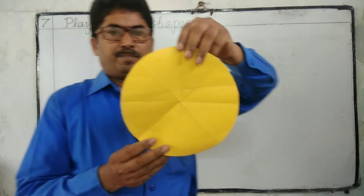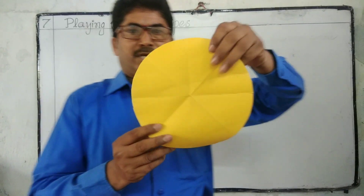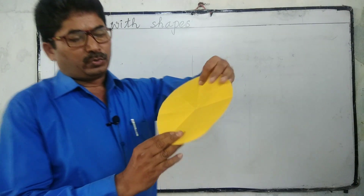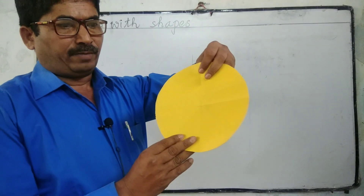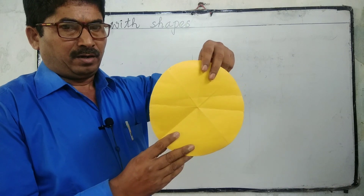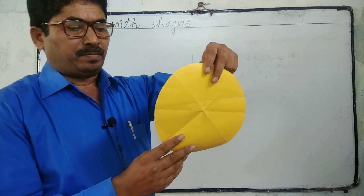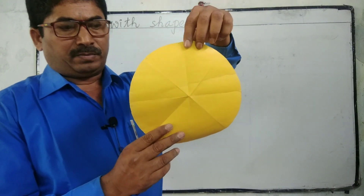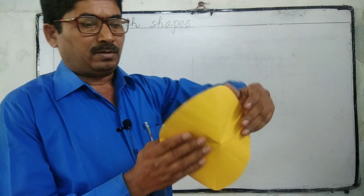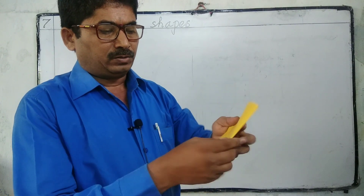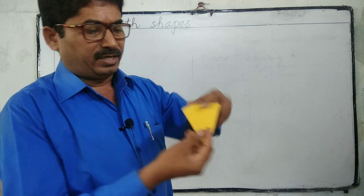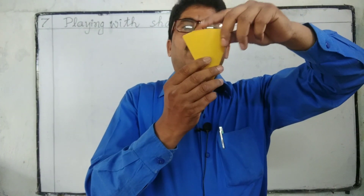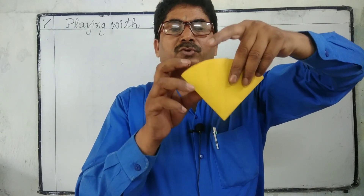Here we have one more shape — this is a circular shape. Using this circular sheet, we have an activity. We fold this circular sheet three times: once, twice, thrice — that means three times. Now we unfold, meaning we open it.